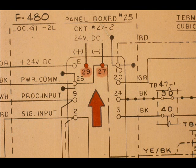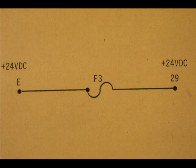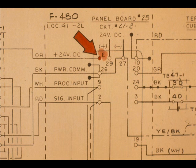Locate terminals 29 and 27 on the loop diagram. Controller terminal E is powered with 24 volts DC through fuse number 3. Notice terminal E.